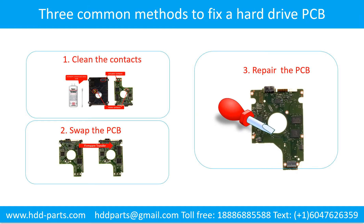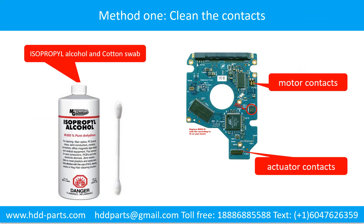Three common methods to fix a hard drive printed circuit board: 1. Clean the contacts, 2. Swap the printed circuit board, 3. Repair the printed circuit board. Method 1 — Clean the Contacts: Cleaning the contacts on the PCB board and also on the hard drive can fix the problem caused by poor connection between the PCB board and the hard drive.